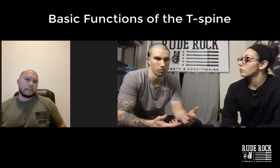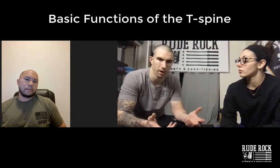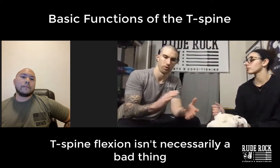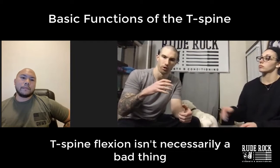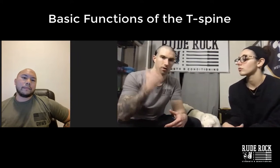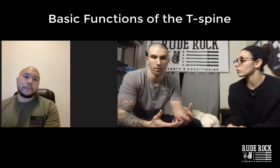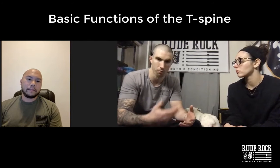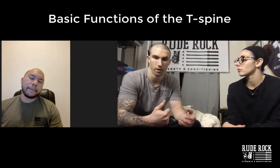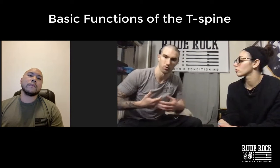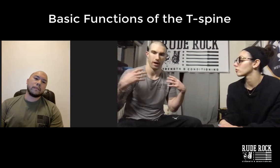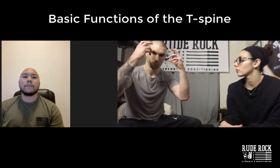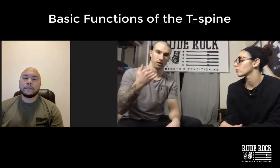Thoracic flexion isn't necessarily a bad thing in and of itself — but we fear-monger about it. There's a spectrum: down on the ground doing cat-camels working thoracic flexion, versus thoracic flexion involved in a heavy front squat or catch on a clean. You look to the demands of the endeavor. In our world, athletes are going to be under a high presence of kyphosis heavily reinforced because they're weighted down with anywhere from 20 to 45 pounds, plus forward head posture from head gear, extending that lever arm.